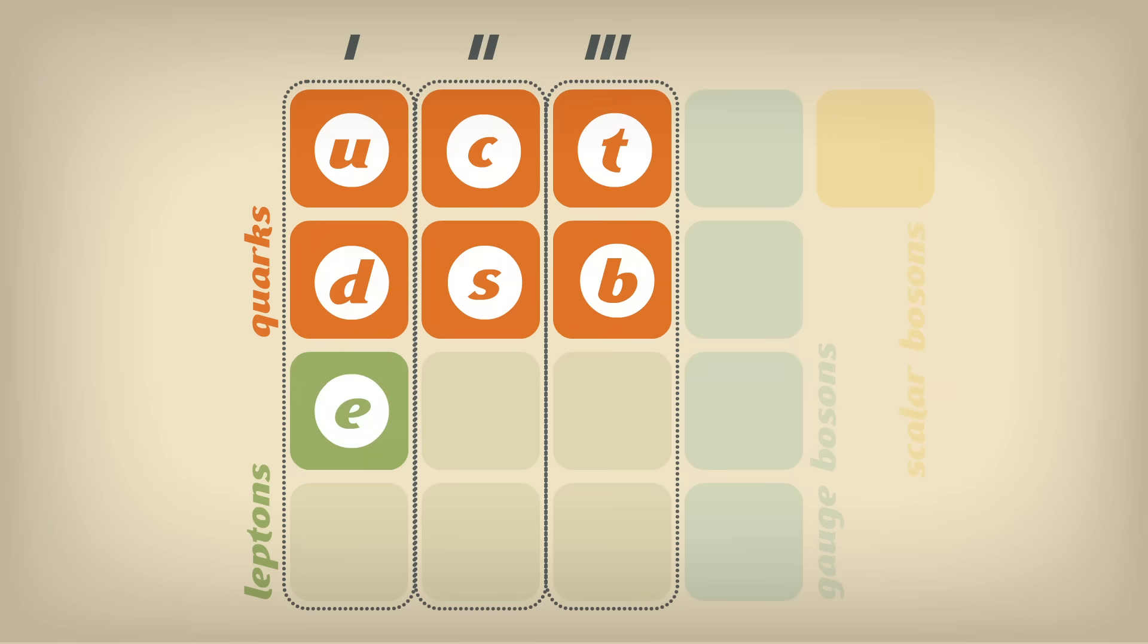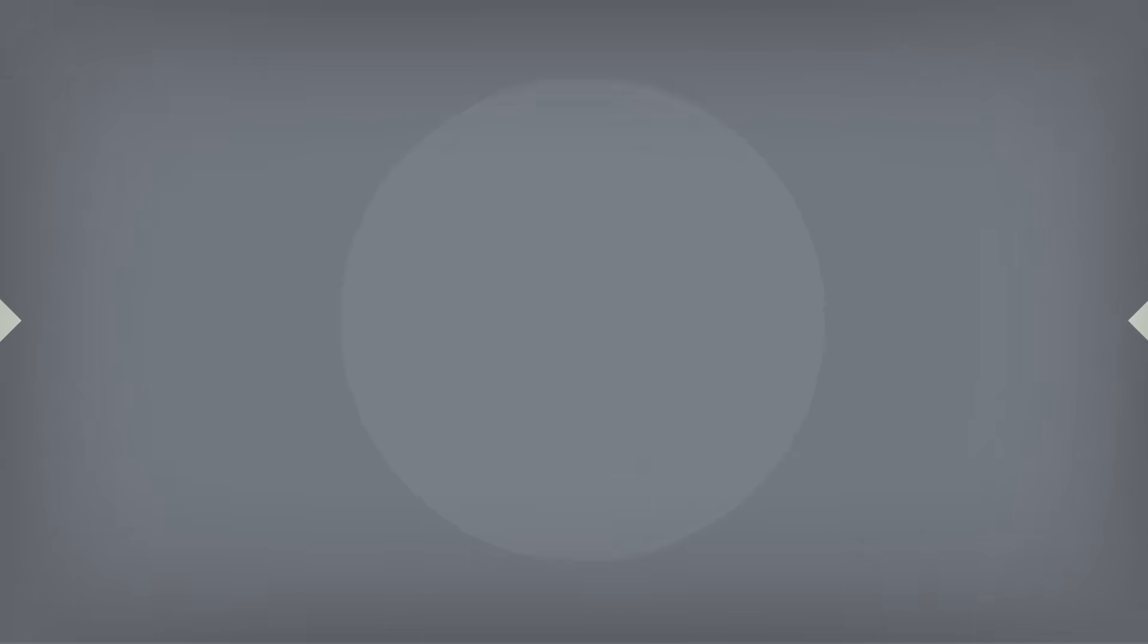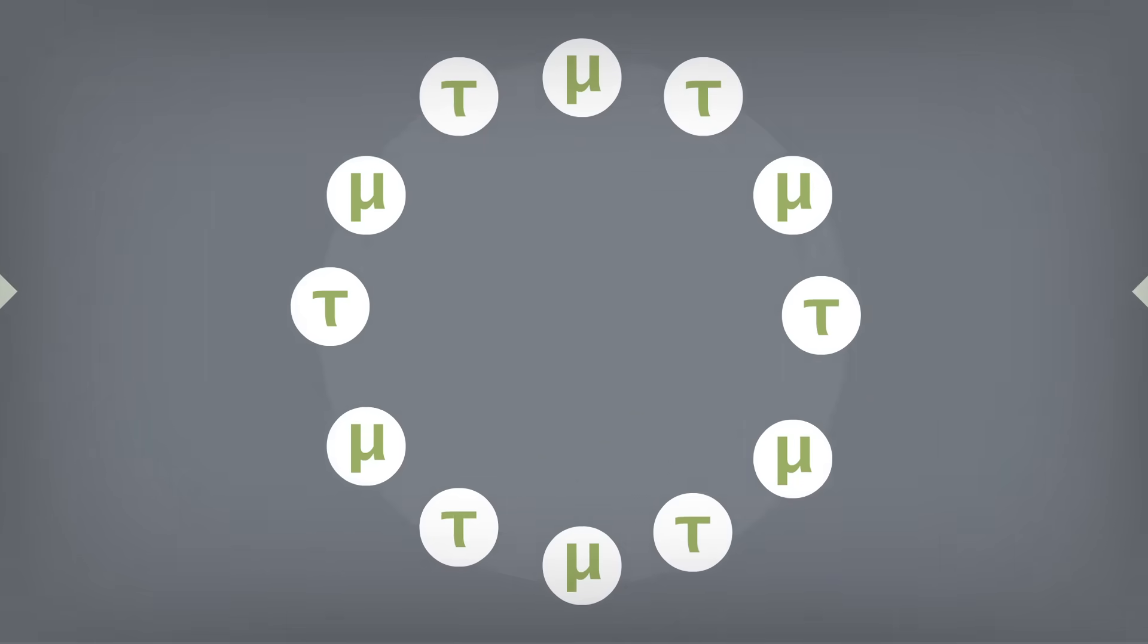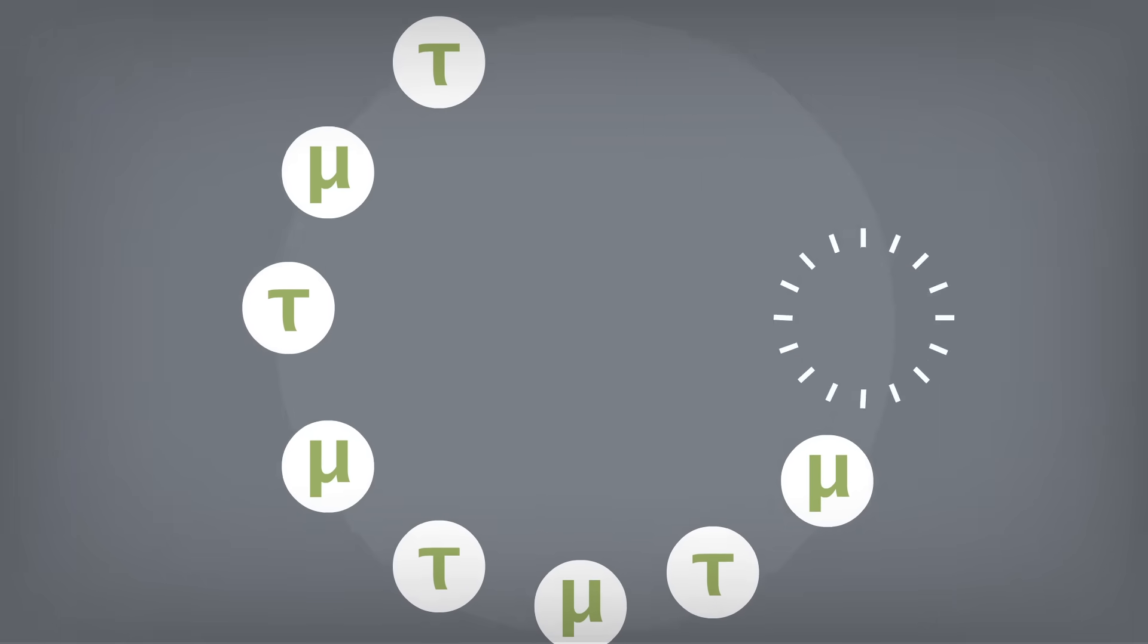The same was found for electrons, which have heavier siblings called the muon and the tau. Why are there three, and only three, different versions of each of these particles? This remains a mystery. These heavy particles are only produced for very brief moments in high-energy collisions, and are not seen in everyday life. This is because they decay very quickly into the lighter particles.